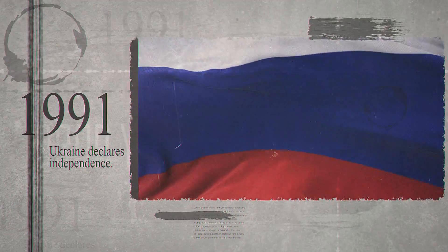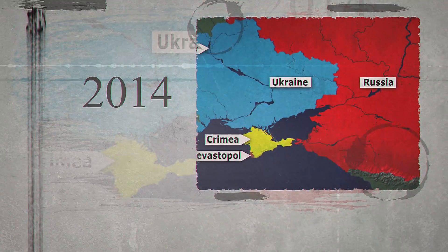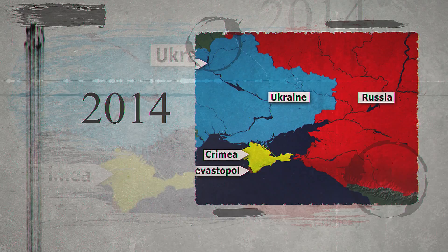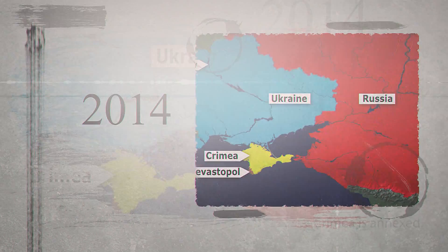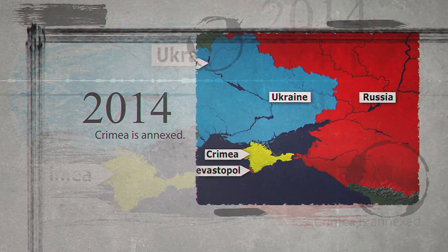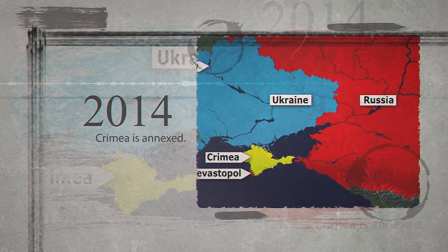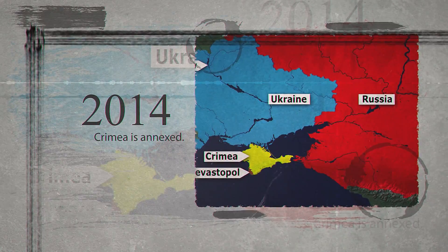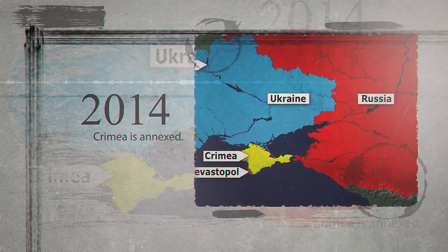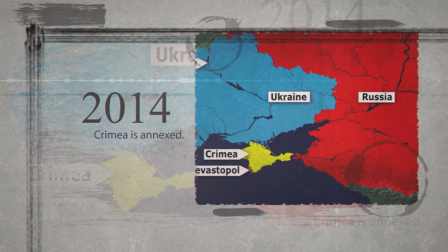Ukraine declared its independence in 1991, just months before the Soviet Union officially dissolved. In 2014, after a Ukrainian revolution and major change in power, Russia annexed the Ukrainian peninsula of Crimea, and the Crimean parliament voted to join Russia.